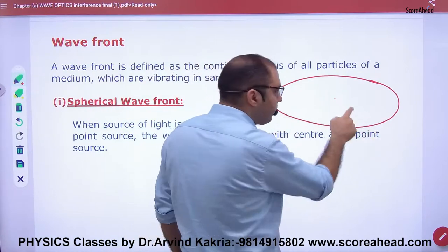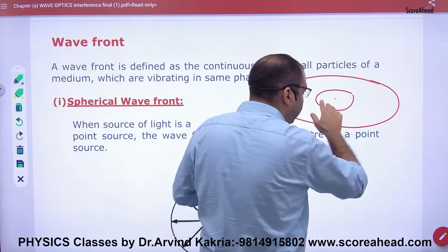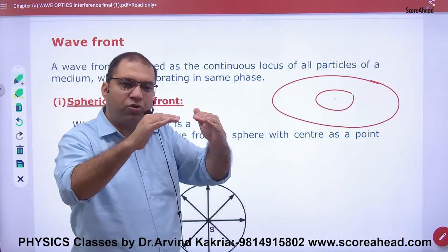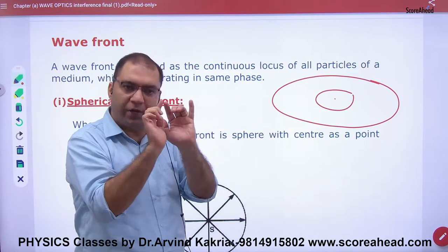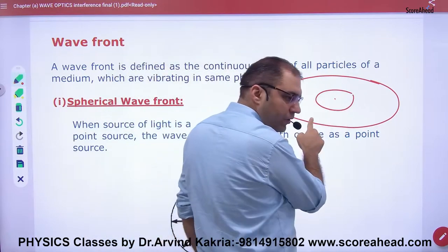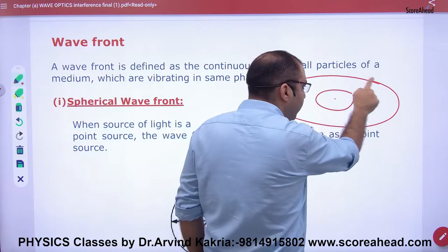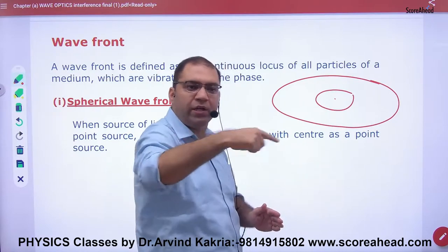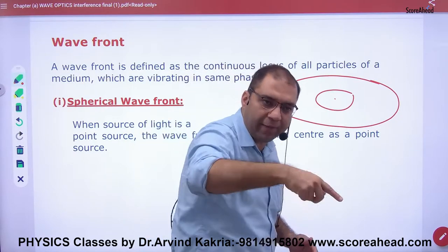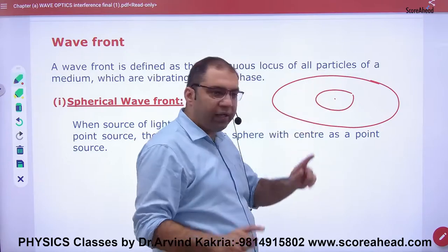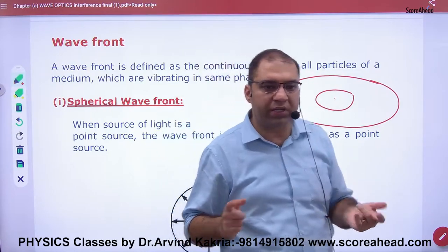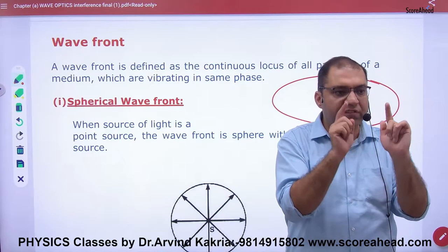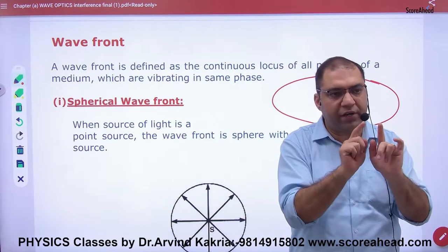When the ripples are created, remember that it is completely crest and crest. Ripples look like this — the portion that is above. All the points that I have joined, the locus means I have joined those points, so I will get a circle. All these particles are behaving the same way — vibrating in the same phase.